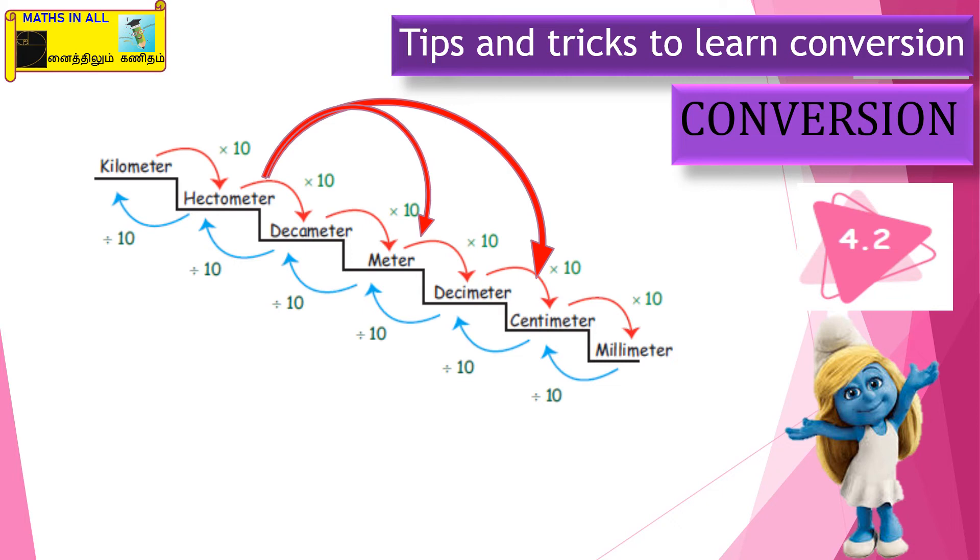See, from hectometer to meter, in between two tens only, so sure we have to multiply with 100, clear? See here, from decimeter to kilometer, so we are reversing, isn't it? So in between four tens are here, so sure we have to divide it by 10,000.